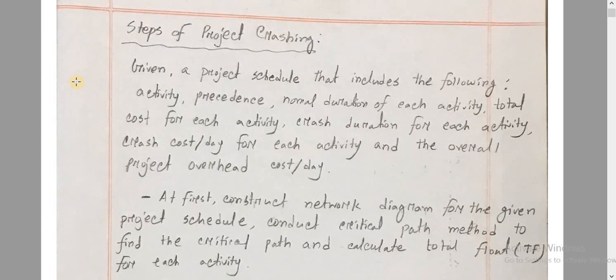Given a project schedule, the inputs include: the activity precedence, normal duration of each activity, total cost for each activity, crash duration for each activity, crash cost per day for each activity, and the overall project overhead cost per day. We have to read the project schedule carefully, noting all activities and their associated costs.